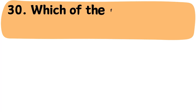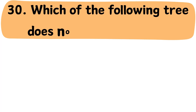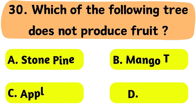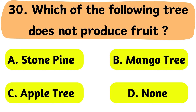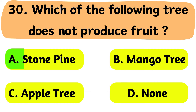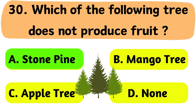Question No. 30: Which of the following tree does not exist? The correct answer is Option A: Stone Pine.